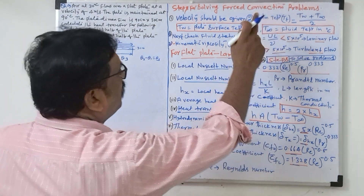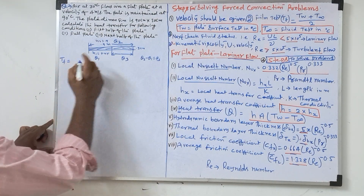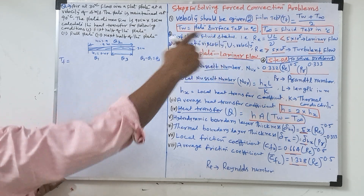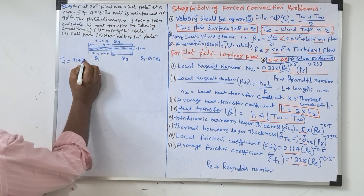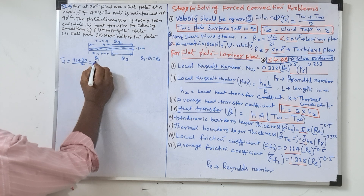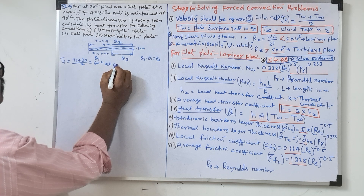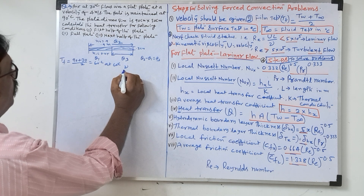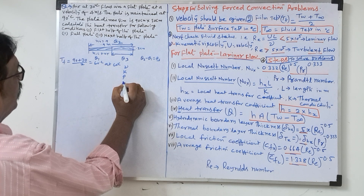First what we will do? We will calculate the film temperature. Film temperature formula is already there. What is Tw? So 90 plus 30 — T infinity — by 2, so 60 degrees Celsius. At 60 degrees Celsius, we will see all the values: nu, K, density, and Prandtl number.